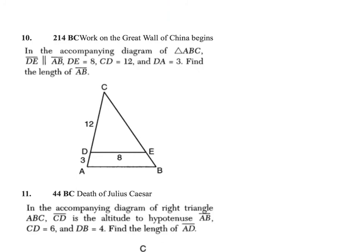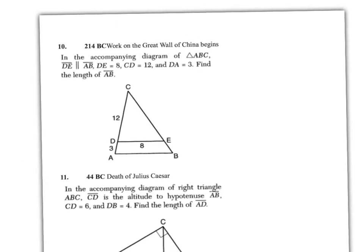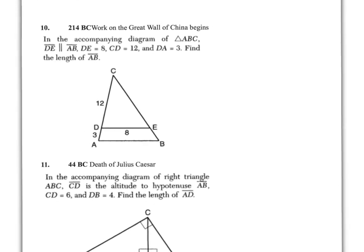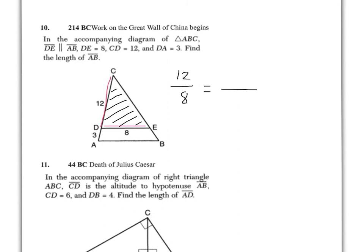For question 10 — 214 BC, the Great Wall of China is beginning to take shape. This involves similar triangles. We've got two triangles: the small triangle and the entire large triangle. Whenever you have similar triangles, you're looking at setting up a proportion. So 12 is to 8 is how it begins — the left side divided by the base should match up with the entire left side and the entire base. That will give you a head start on what you have to write to solve that one.